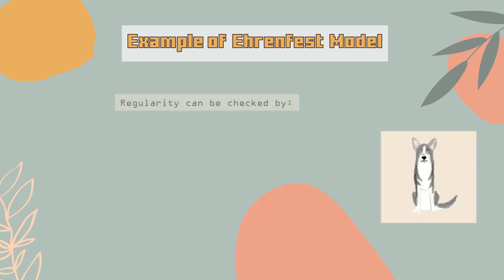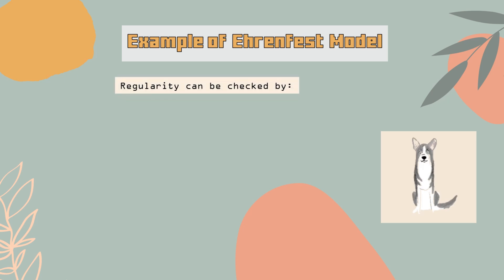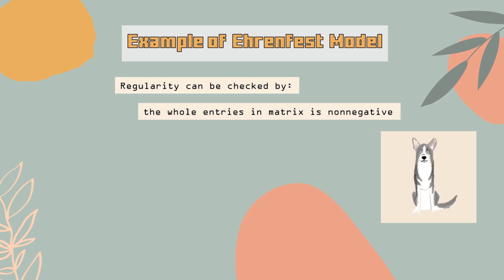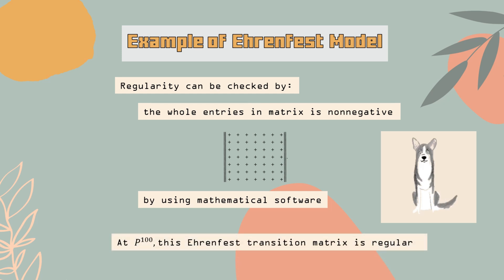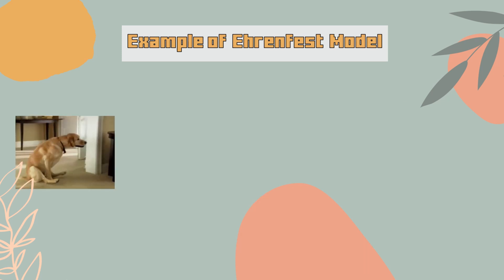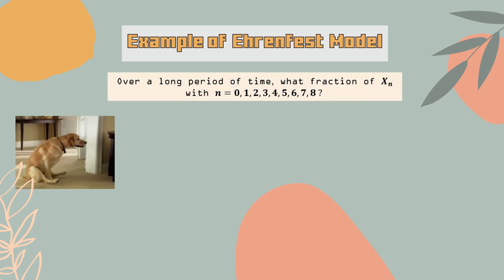The regularity of this Markov chain can be checked by looking at all entries in the matrix to see whether they are non-negative. Using mathematical software, we found that P to the power of 100 — this Ehrenfest transition matrix — is regular.